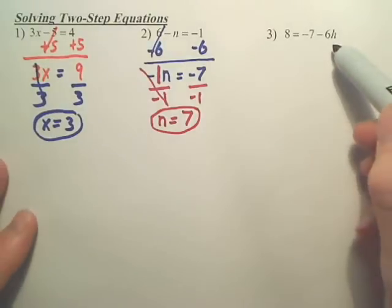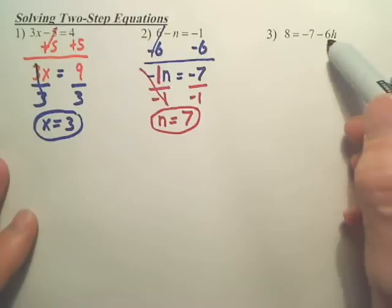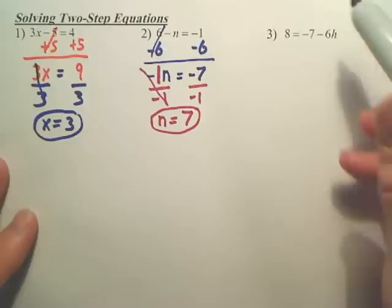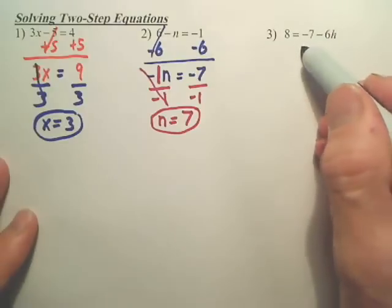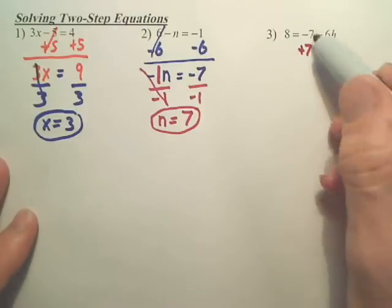Last one. Now, it's a little bit different because the h is on the right side, but that doesn't matter. We still solve it, leaving h on the right side. That's okay. So I'm going to get the negative 6h by itself. That's a negative 7. So the opposite of negative 7 is plus 7.